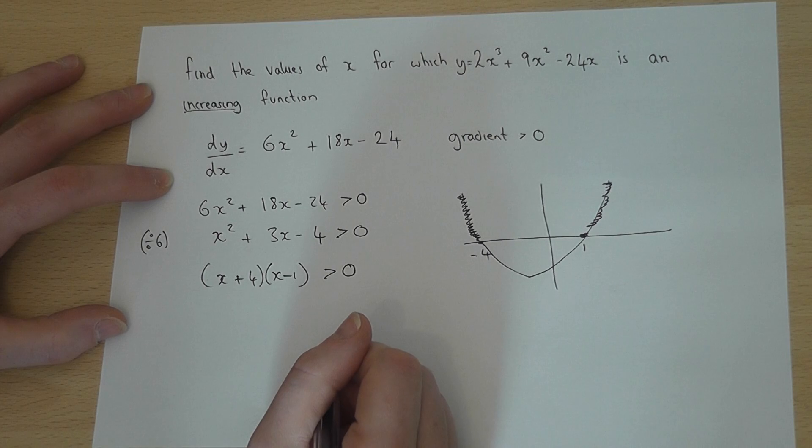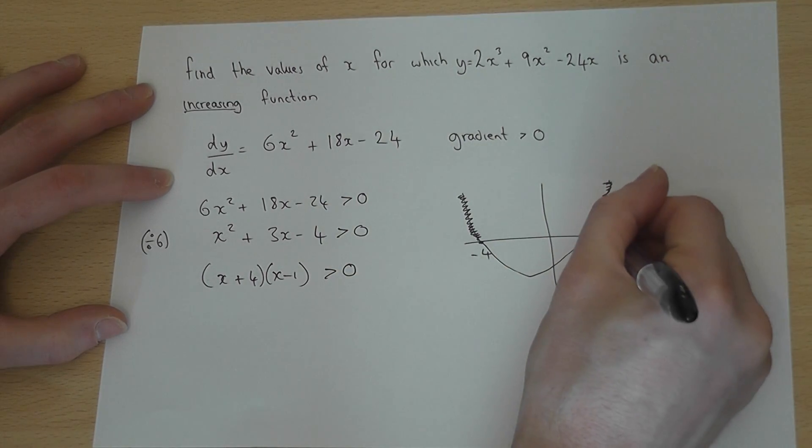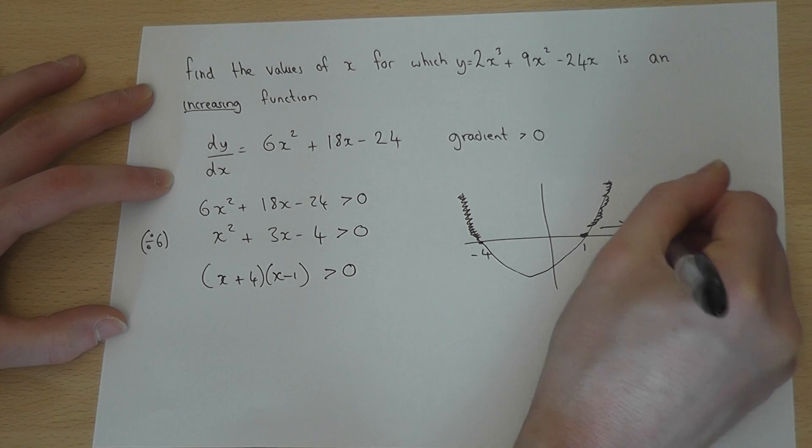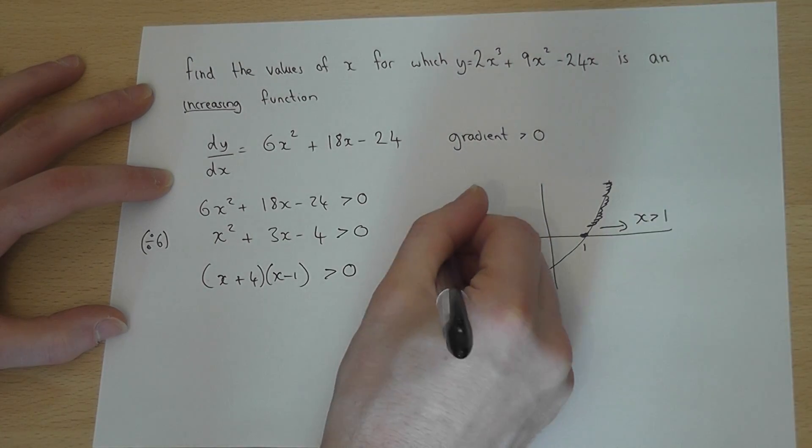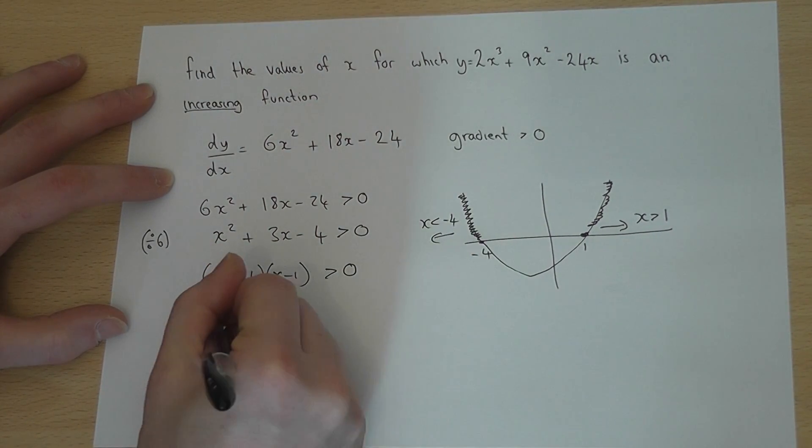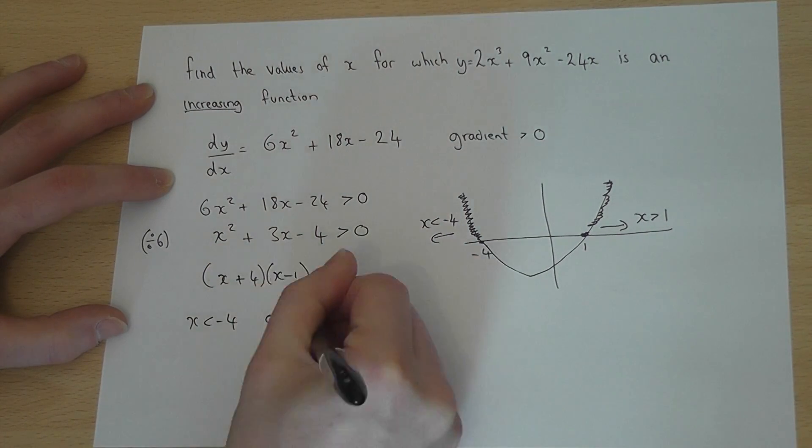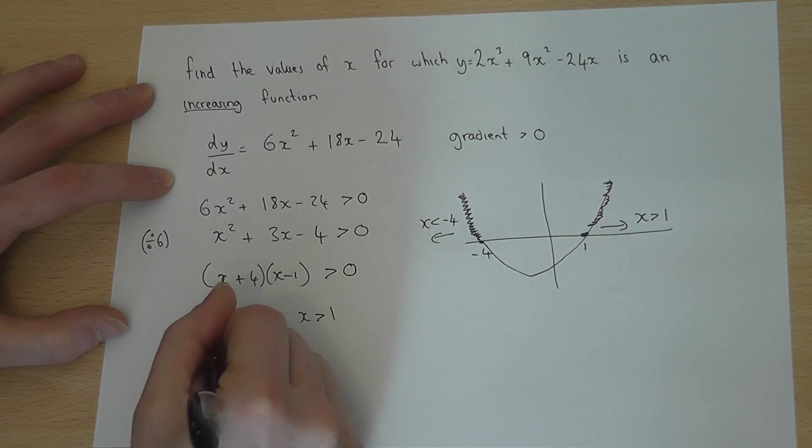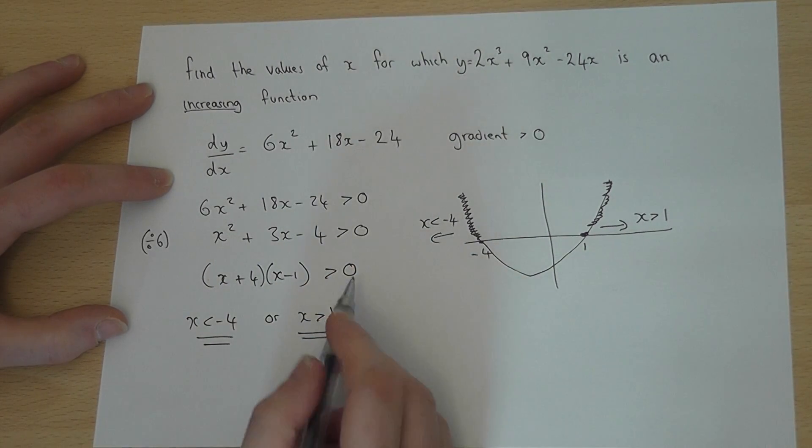So the function is bigger than zero when x is bigger than 1 or when x is less than minus 4. When x is less than minus 4 or x is bigger than 1, we have the gradient function is bigger than zero, so therefore our original function is an increasing function. So these are the solutions.